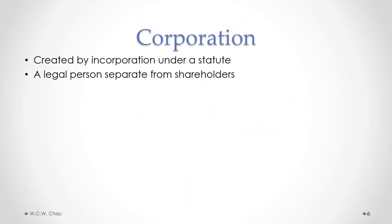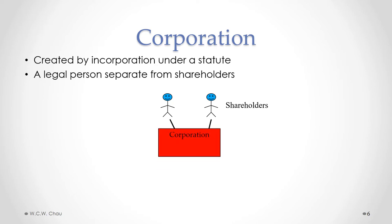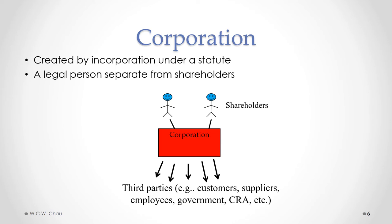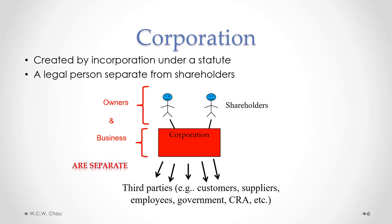Now, the corporation. A corporation is created by incorporating under a statute created by either the federal parliament or a provincial legislature. A corporation is considered to be, on its own, a legal person that is separate from its shareholders. The owners are called shareholders — it can be either one person or an unlimited number of people. The shareholders own shares in this separate legal person called the corporation, which as a separate legal person has dealings with outside third parties. The key legal aspect is that the owners and the business are separate, which is what makes a corporation very different from either a sole proprietorship or a partnership.